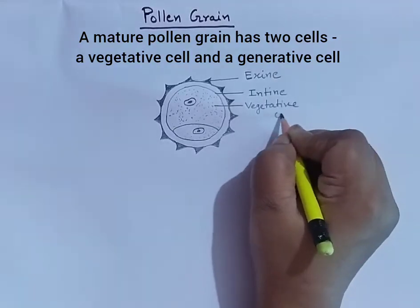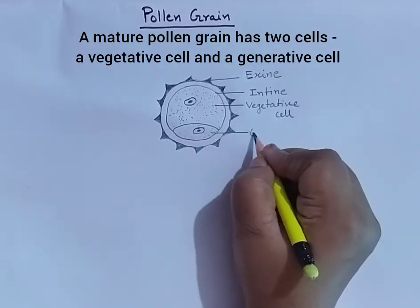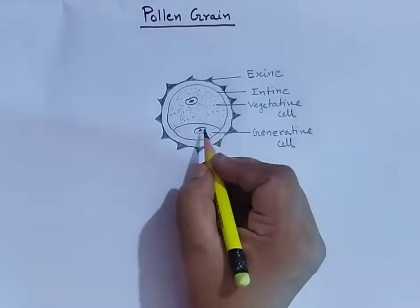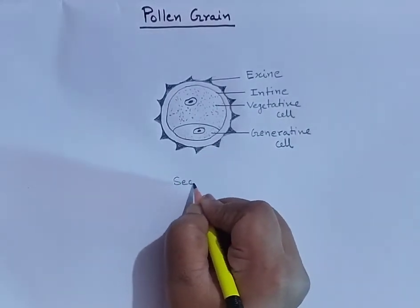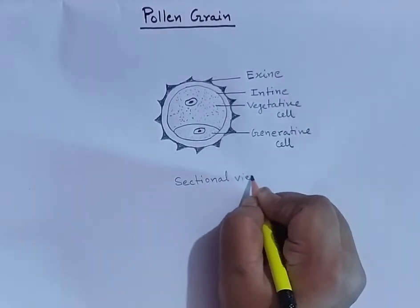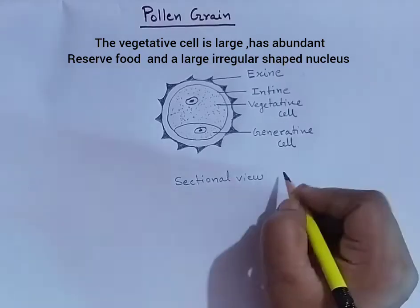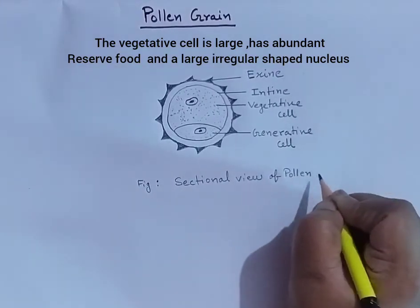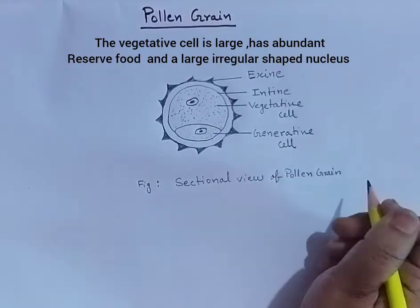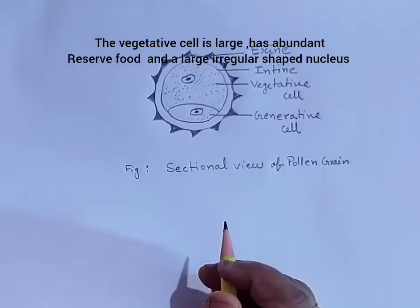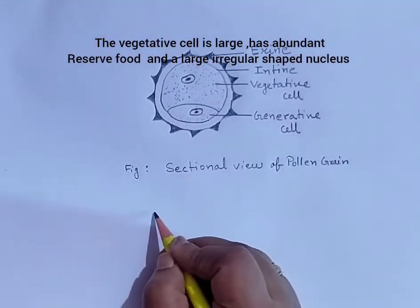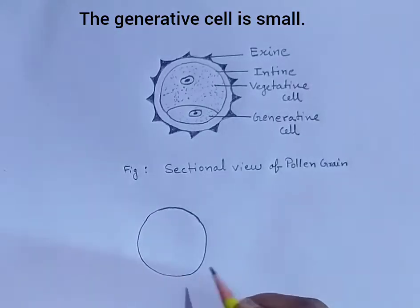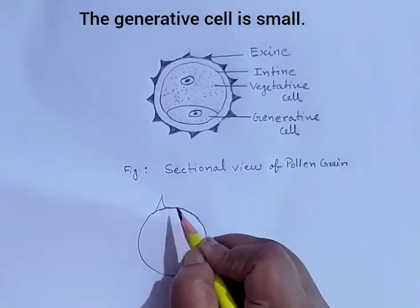A mature pollen grain has two cells: a vegetative cell and a generative cell. The vegetative cell is large and has abundant reserved food and a large irregular-shaped nucleus. The generative cell is small.